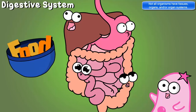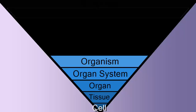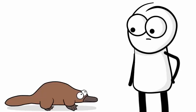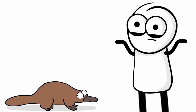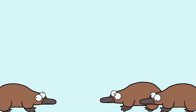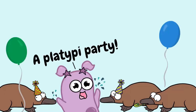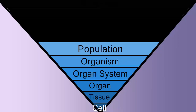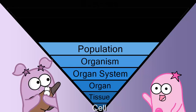The digestive system is just one example of an organ system. But tie in all of the organ systems and what do you get? An individual. An organism. Like you. Or this platypus — he's got organ systems too. Now, if you have a lot of platypuses together — according to dictionary.com, you can say platypi, which sounds especially fancy — you have a population. This population of platypi can breed with each other, and they're all the same species. It's a platypi population.